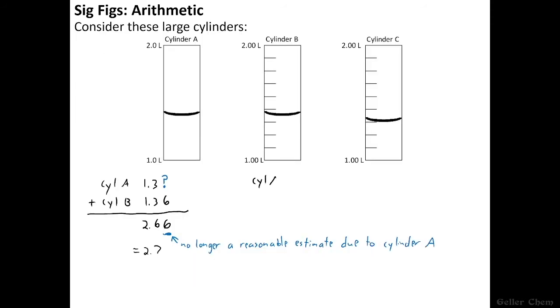Now for the record, there is no practical reason we would ever do this in the chemistry problem. There is no reason we would ever multiply volumes together. But again, I'm just showing you this rule in effect in the simplest manner possible. So here we go. Cylinder A times cylinder B, 1.3 liters times 1.36 liters. And you'll see why I'm suddenly including the units momentarily. Although we should technically always be writing our units when we're doing math.